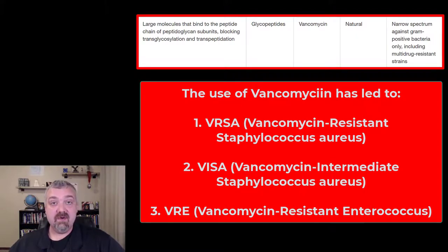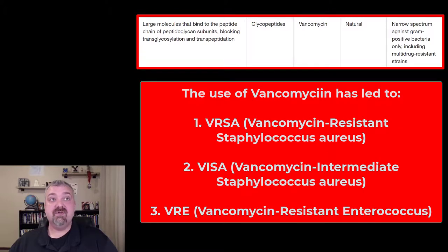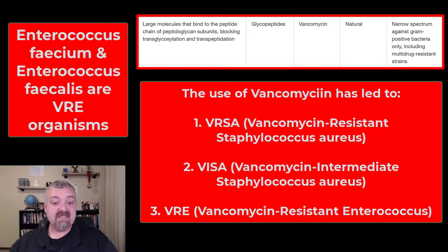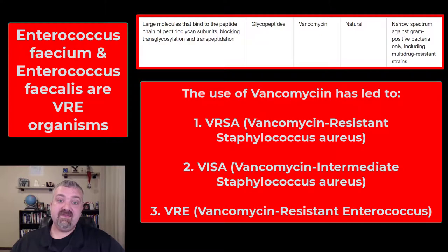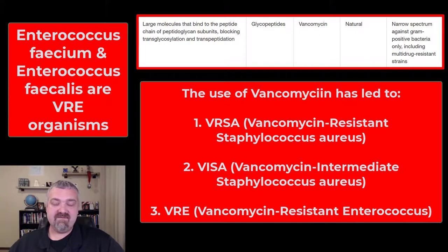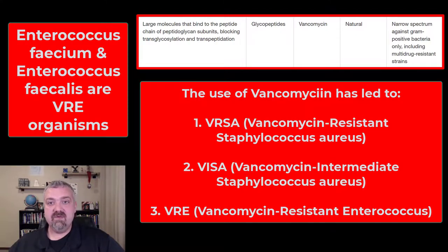VRE is vancomycin-resistant enterococci or enterococcus. The two big ones talked about the most — they sound similar — are Enterococcus faecium and Enterococcus faecalis. I'll put them up on the screen. These are common nosocomial problems in the United States. Nosocomial is the Latin word for hospital, so these are healthcare-associated infections. VRE is another major resistance we've seen.